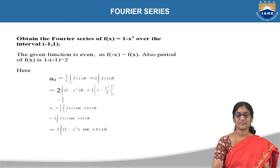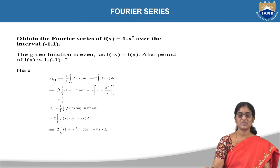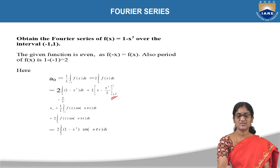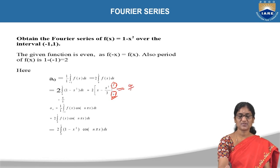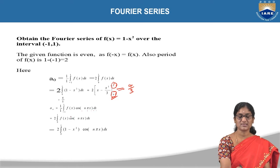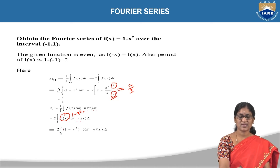Since f(x) is even, a₀ = 2 × integral from 0 to 1 of (1 − x²) dx = 2 × [x − x³/3] from 0 to 1. After substituting the upper and lower limits, a₀ comes out to be 4/3. For aₙ: aₙ = (1/1) integral from −1 to 1 of (1 − x²) cos(nπx) dx = 2 × integral from 0 to 1 of (1 − x²) cos(nπx) dx, since the function is even.